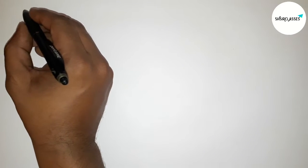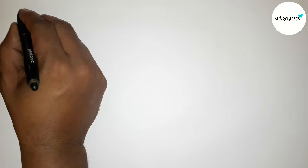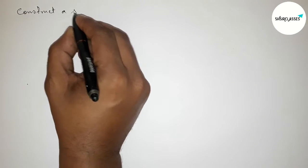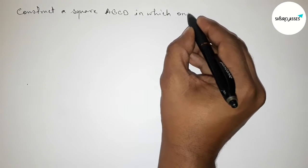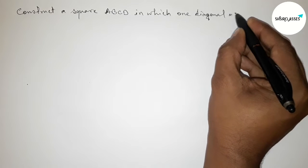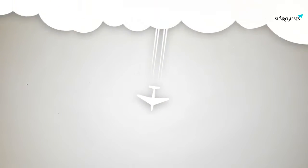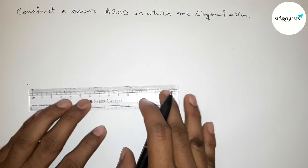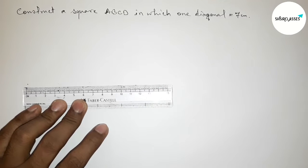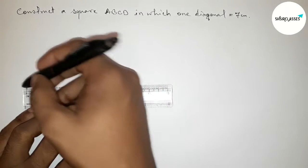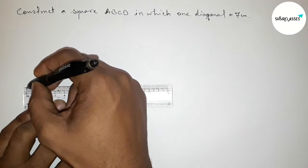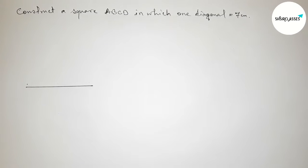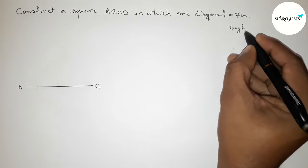Welcome to this class. Today we have to construct a square ABCD in which one diagonal equals 7 centimeters. First, with the help of a scale, drawing the diagonal 7 centimeters — starting from 0 and marking 1, 2, 3, 4, 5, 6, 7. This is a 7 centimeter line segment. Taking point A here and point C here, so line AC equals 7 centimeters.